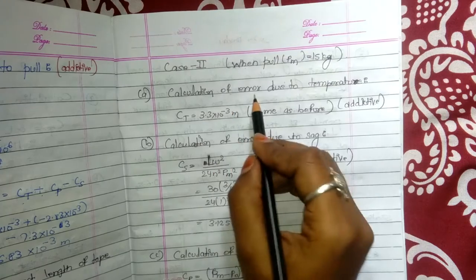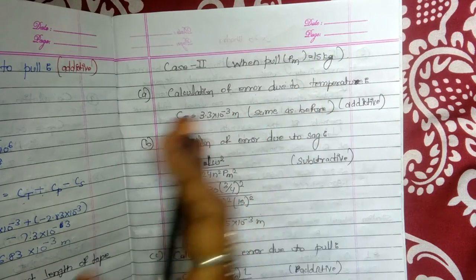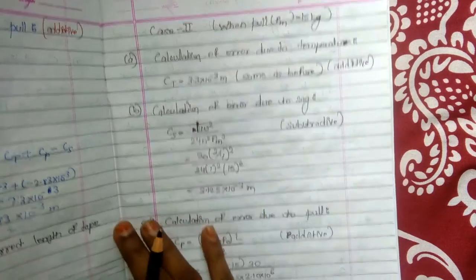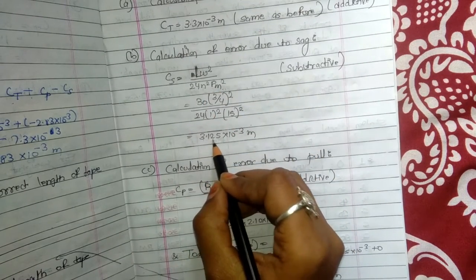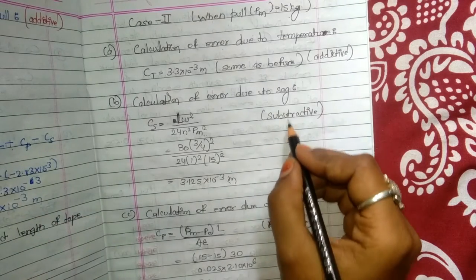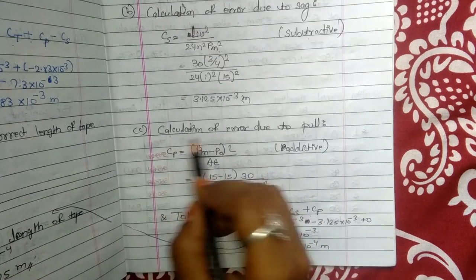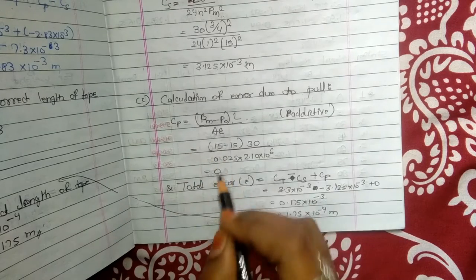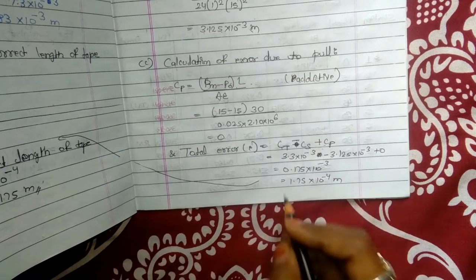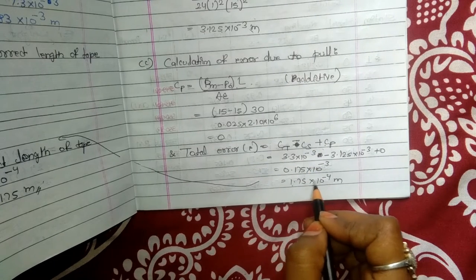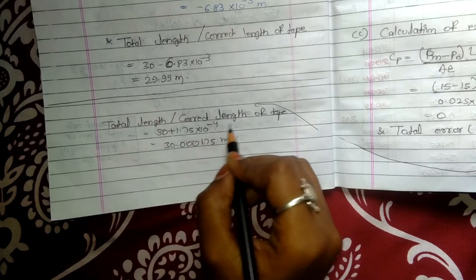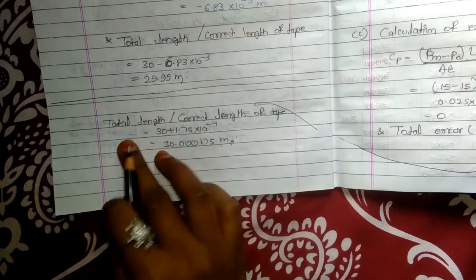For Case 2, pull PM equals 15 kg. Error due to temperature remains the same. For sag, PM is now 15, giving 3.125 × 10⁻³ meters — remember, sag is subtractive. For pull error, PM equals 15 and P₀ equals 15, so the pull error is zero. Total error equals CT plus CP minus CS, giving 1.75 × 10⁻⁴. Therefore, the true length of tape is 30.000175 meters.